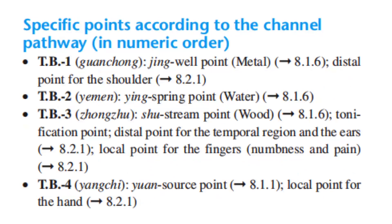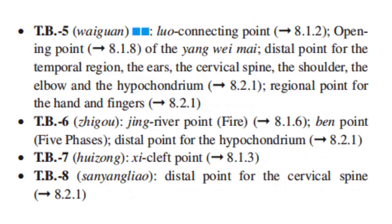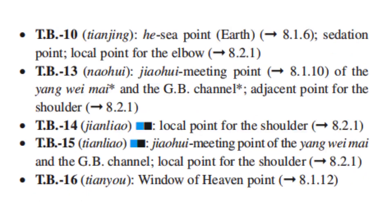Specific points in numerical order. TB1 is the Jing Well Point, Metal point, and distal point for the shoulder. TB2 is the Ying Spring Point, Water point. TB3 is the Shu Stream Point, Wood point, tonification point, distal point for the temporal region and ears, and local point for the fingers, numbness and pain. TB4 is the Yuan Source Point and local point for the hand. TB5 is the Luo Connecting Point, opening point of the Yang Wei Mai, and distal point for the temporal region, ears, cervical spine, shoulder, elbow, and hypochondrium. TB6 is the Jing River Point, Fire point, horary point, and distal point for the hypochondrium. TB7 is the Xi Cleft Point. TB8 is the distal point for the cervical spine. TB10 is the He-sea Point, Earth point, sedation point, and local point for the elbow.